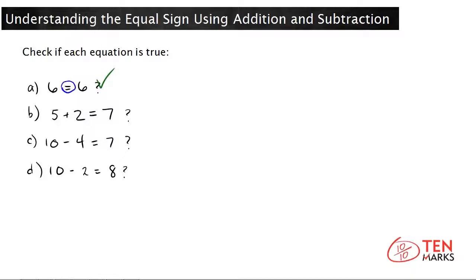Now, let's look at B. 5 plus 2 equals 7. First, you have to add 5 and 2 and see if that value equals 7.